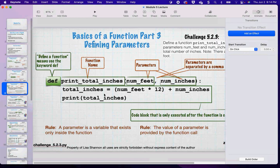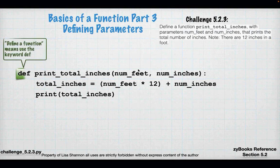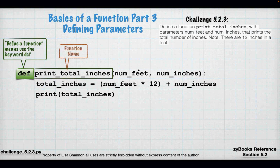Now, what we have is extra stuff. We talked about `def`; now we're going to talk about things in between those parentheses. I still have the `def` — Python will take everything that is inside the code block of the function, meaning it's after the `def` and it is indented, and it's going to store it. Now I have my function name — `print_total_inches`. In between the parentheses, I have two things called parameters. A parameter is a private variable associated with the function.